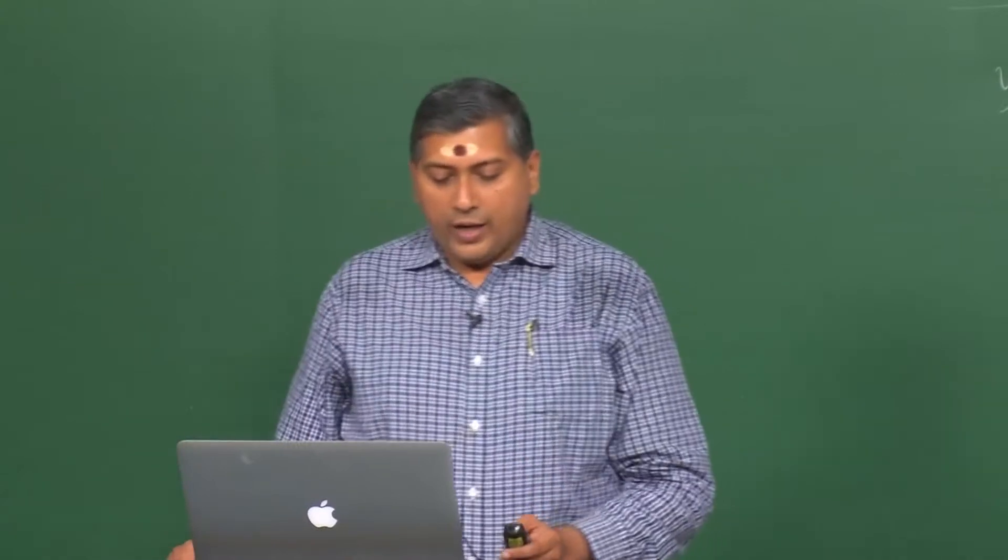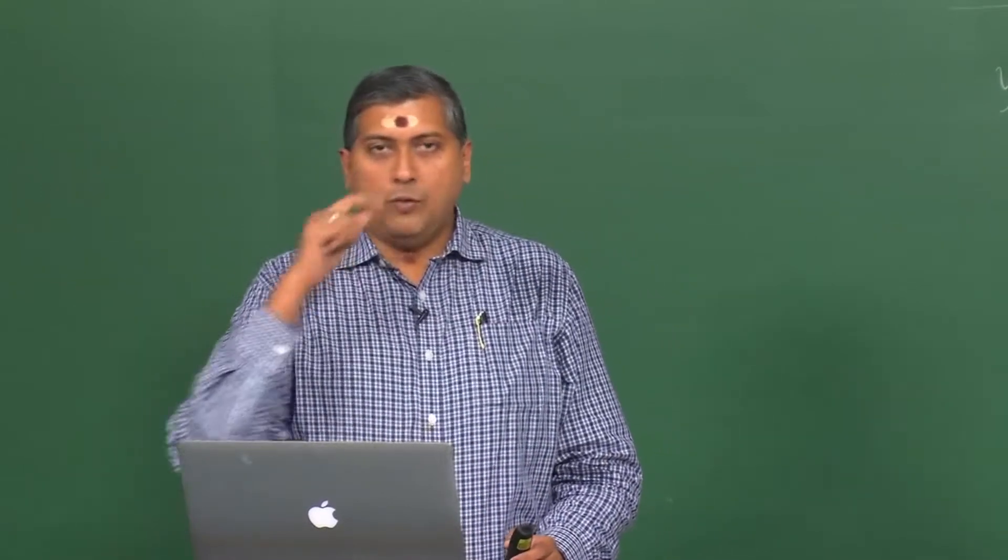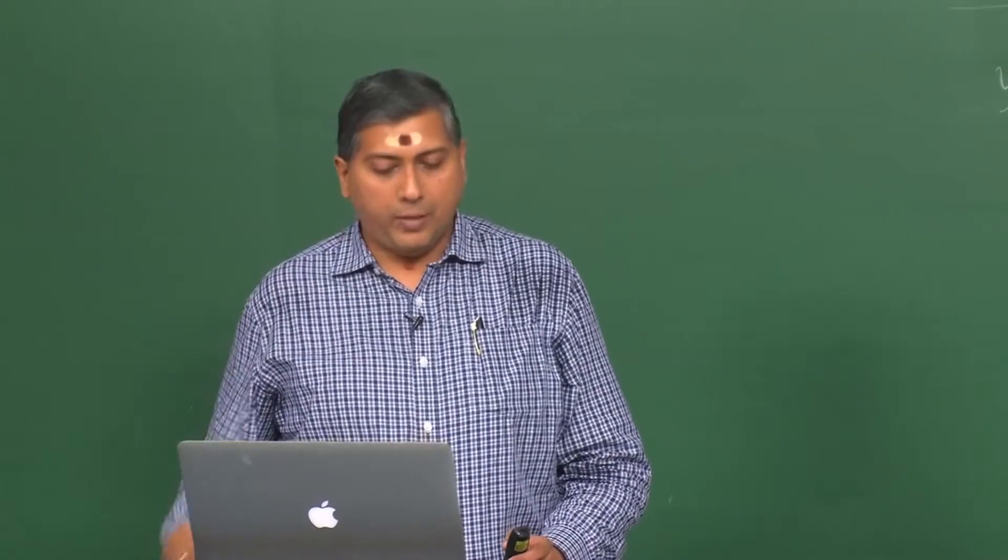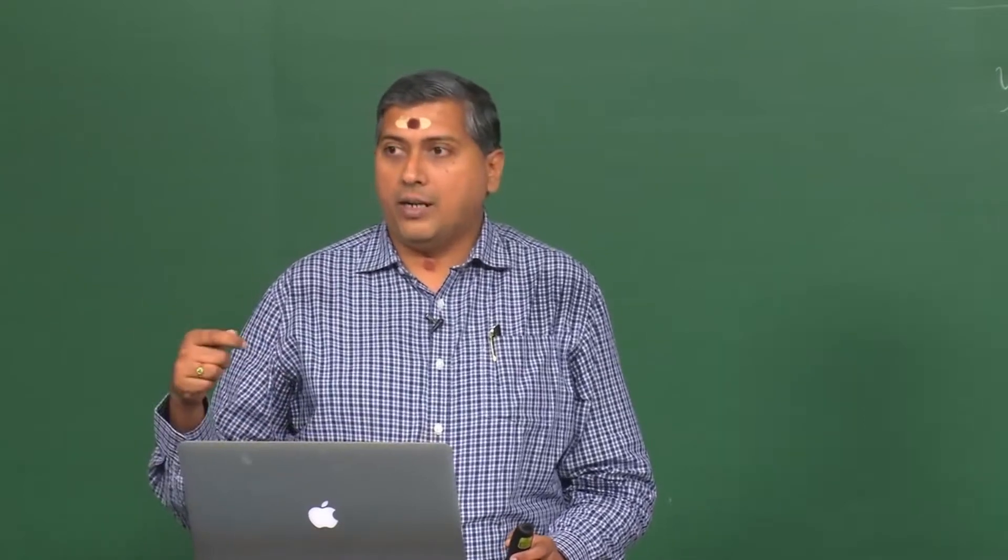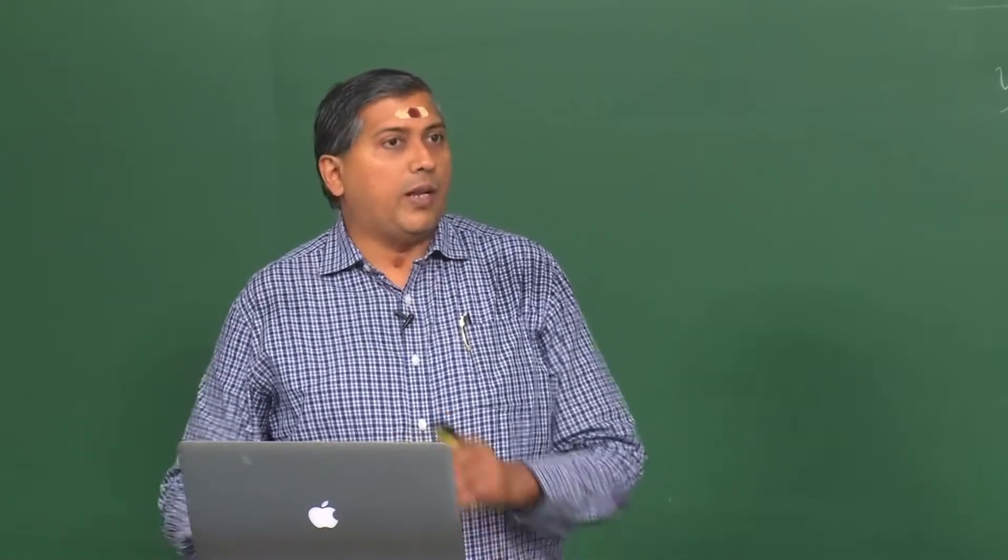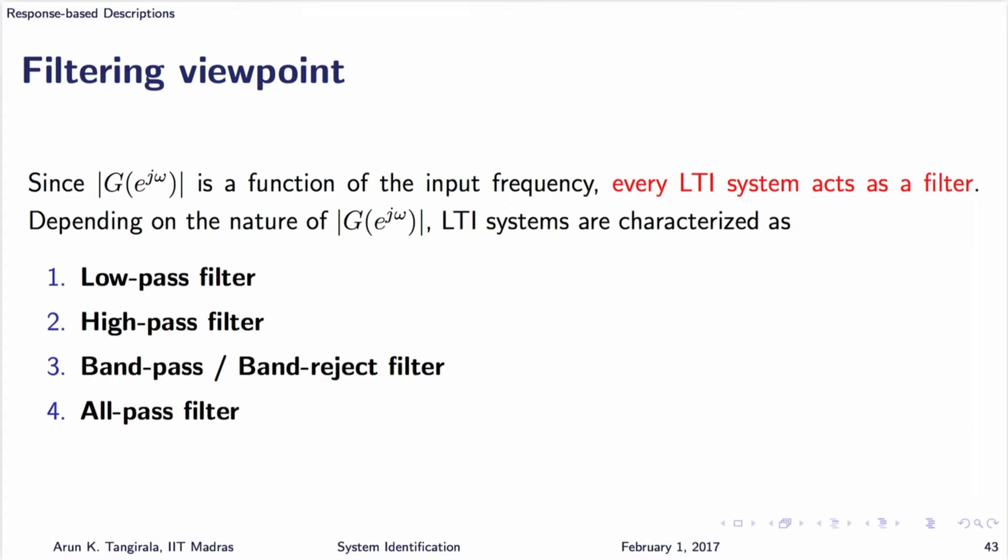So we have talked about the filtering viewpoint. There are four different filters: low pass filter, high pass filter, band pass or band reject and all pass filter. All these names are given based on how the amplitude ratio looks like as a function of omega. What kind of a filter is pure delay? All pass. It allows all frequencies to go through without any preferential treatment, correct? So you should be familiar with all of this.